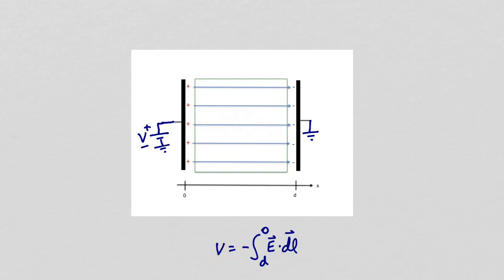The voltage drop across the plates is minus the integral from the plate at D to the plate at zero of E dot DL.